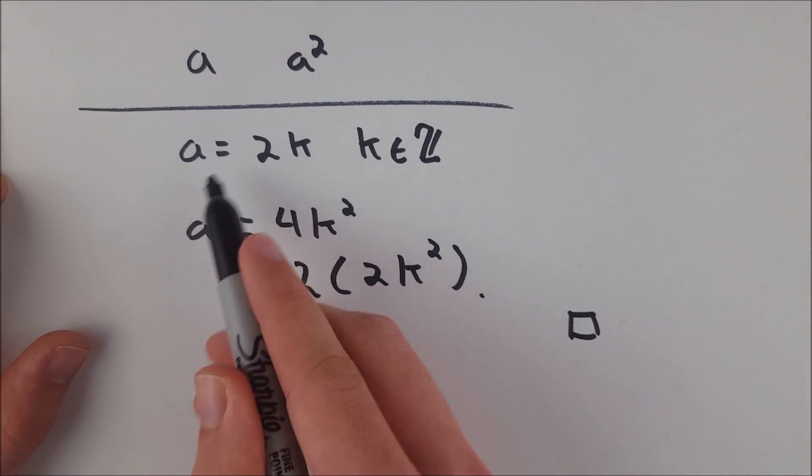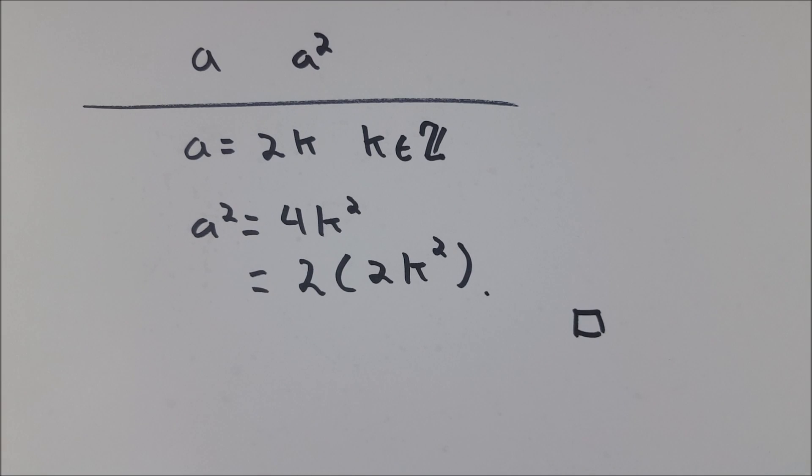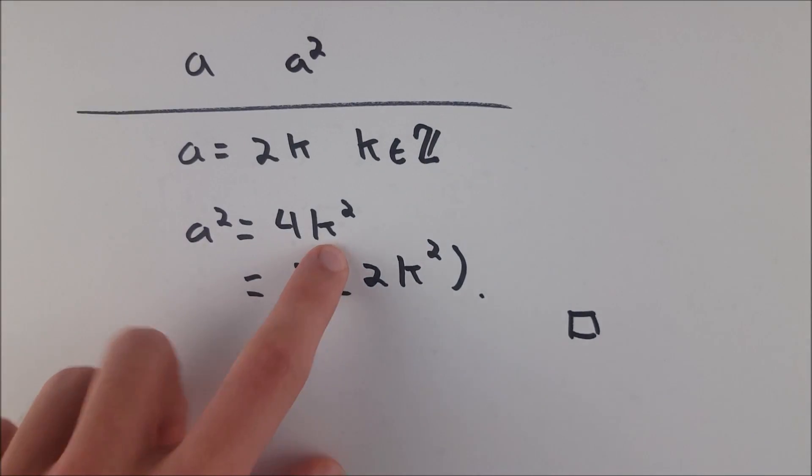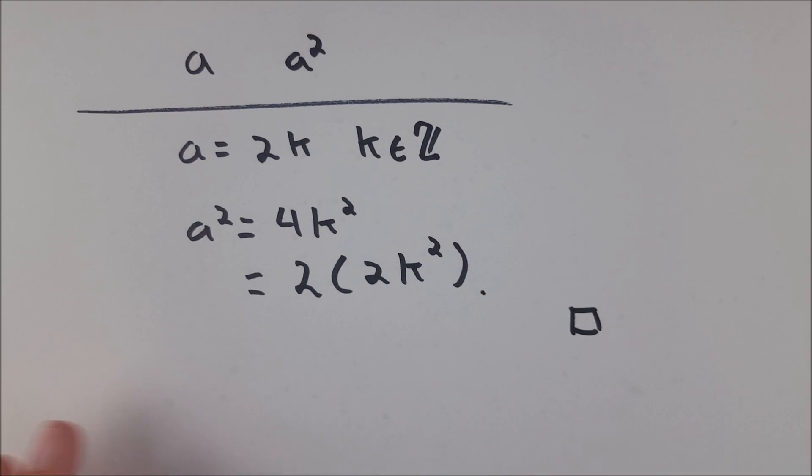So we know that a was even, so we wrote it as being equal to 2k by definition of an even number. Square both sides of that equation, factor out a 2, and then you have a by the books definition even number for a squared. So you're guaranteed to always have an even number.